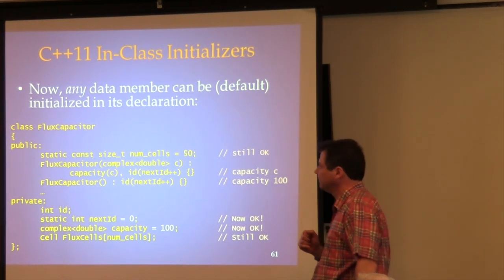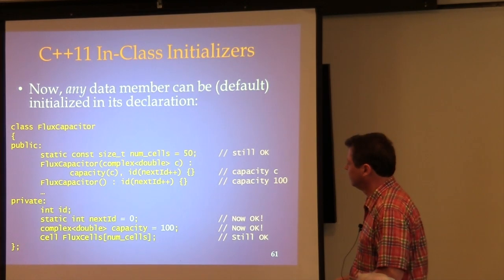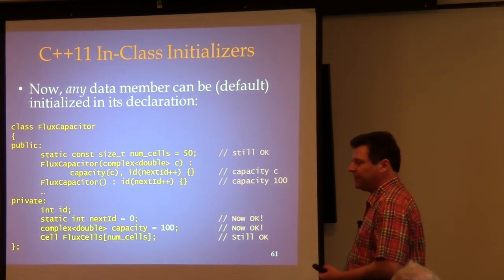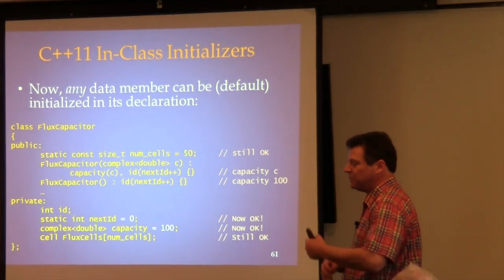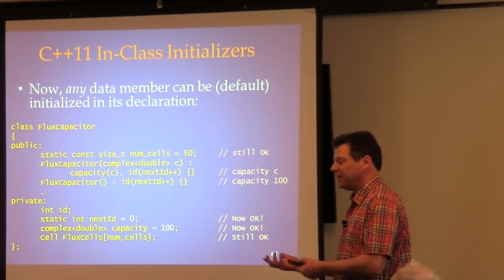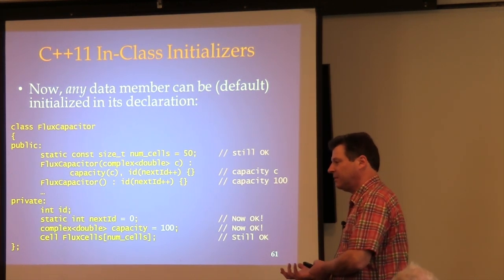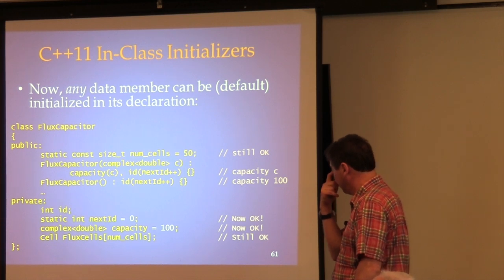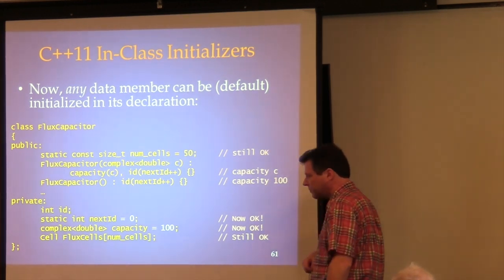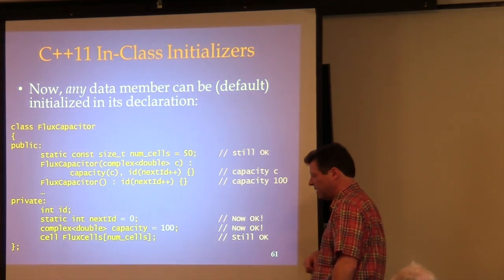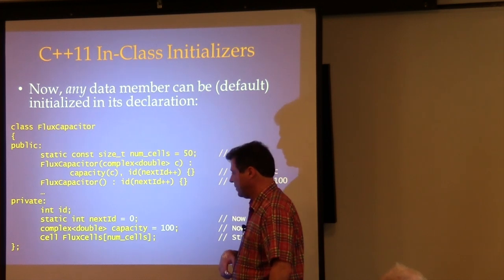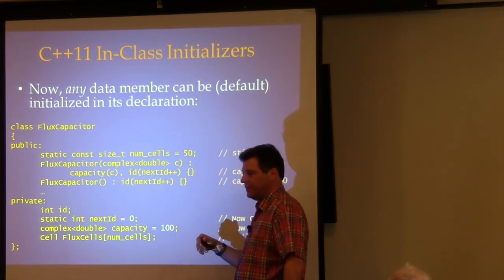Now a static that's not const can be initialized right there. The ID starts at zero — why not say it right there? Wasn't it a pain to have to declare the thing outside the class and then remember whether to put it in the header or the CPP file? Just stick it in there. Even an ordinary data member can be initialized, and that's the default value if you don't do anything else.